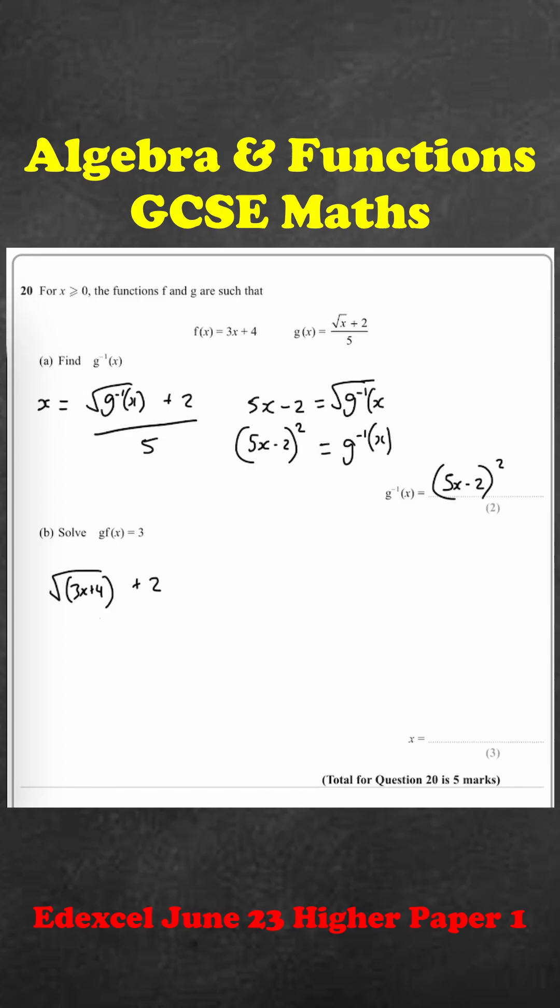All I'm doing here is replacing the x in g with the function f, set equal to 3. Multiply through by 5 and take off the 2, so we get square root of 3x plus 4 equals 15 minus 2, which is 13.